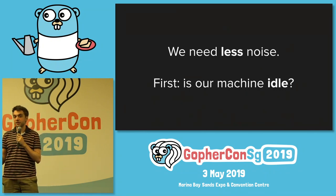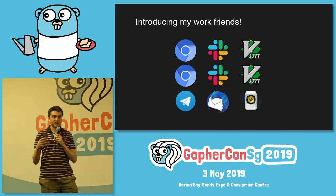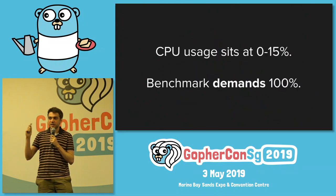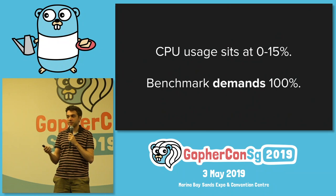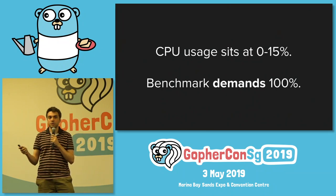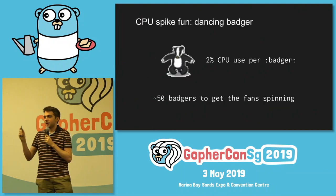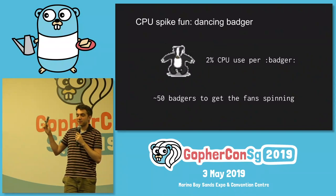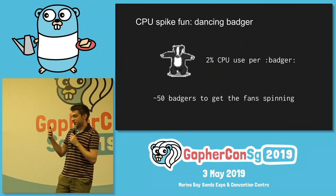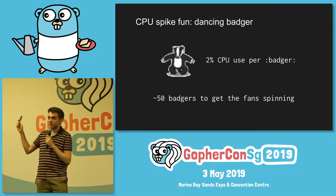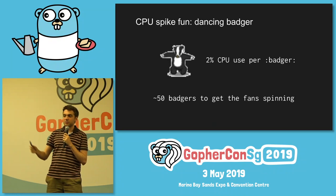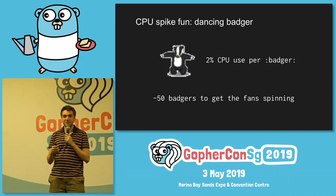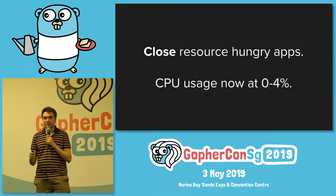The first question we should ask is: is the machine idle? When I work in Go code, I tend to have a couple of separate browsers each with a couple of Slack tabs, editors, music, email, and so on. This is a problem because my CPU usage sits at between zero and 15%, even though supposedly I'm not doing anything. This JSON benchmark depends on 100% of all my cores because it's a parallel benchmark, and JSON uses your CPU. In Slack, you can have animated emojis — on the Gopher Slack there's a dancing badger, and each one uses about 2% CPU. So close resource-hungry apps — wink wink, Slack, but also others. CPU usage should now be at between zero to 4%, even on the spikes.